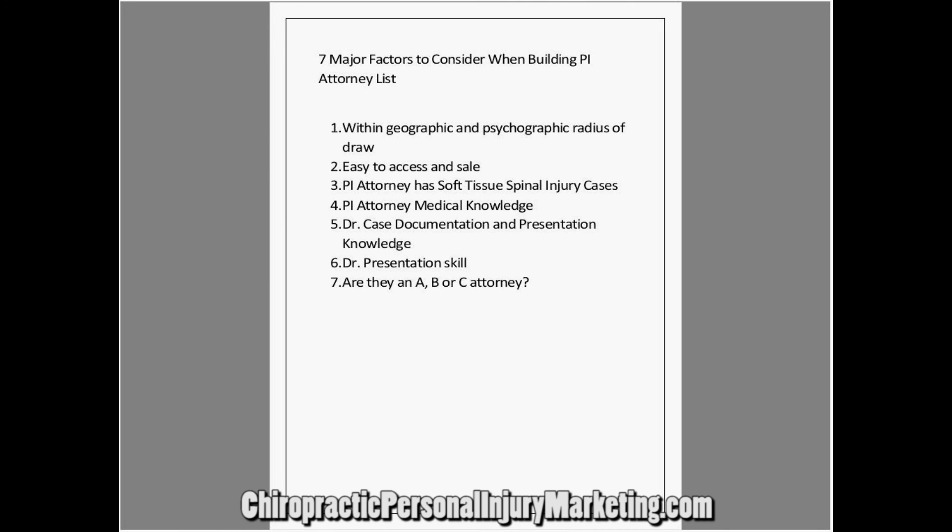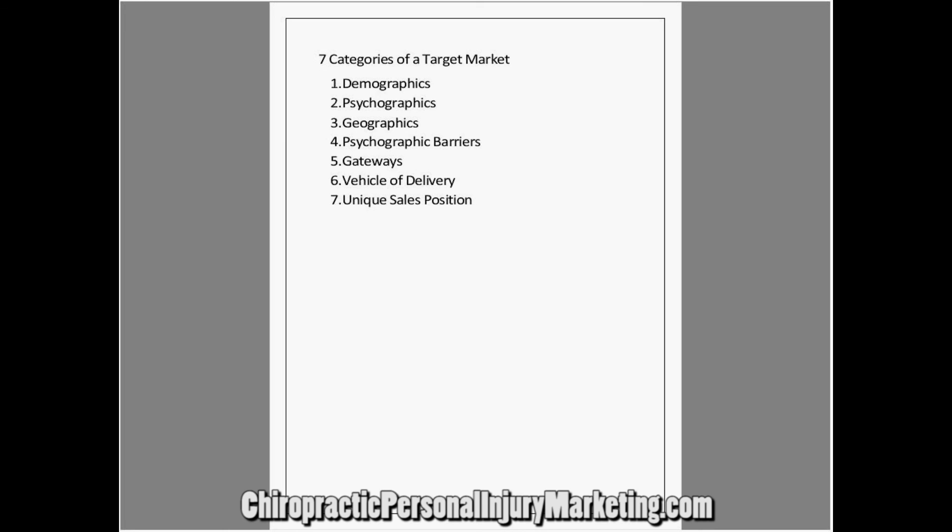Number seven: are they an A, B, or C attorney? When we say A, B, or C attorney, we're talking about which category they fit into — narrowing it down into better demographics, psychographics, psychographic barriers, gateways, vehicle delivery, and unique sales position. We're just trying to simplify and narrow it down. That's all we're talking about.